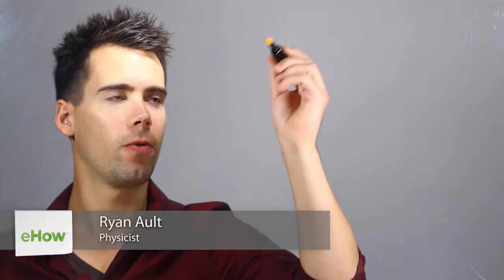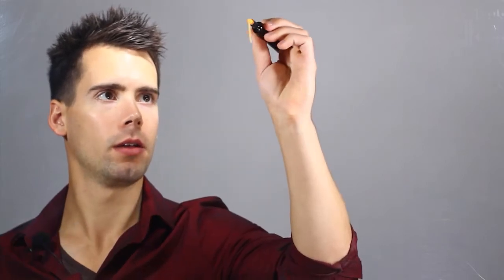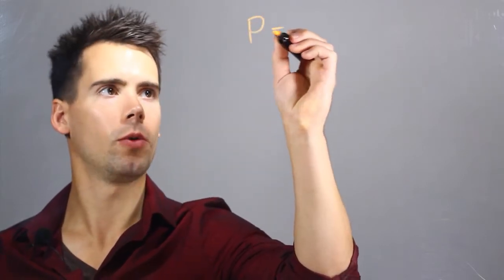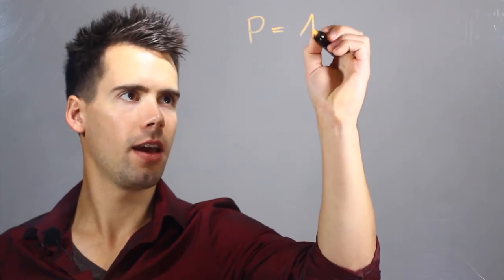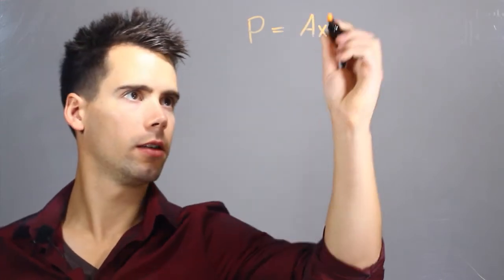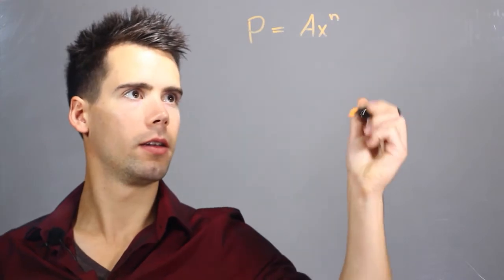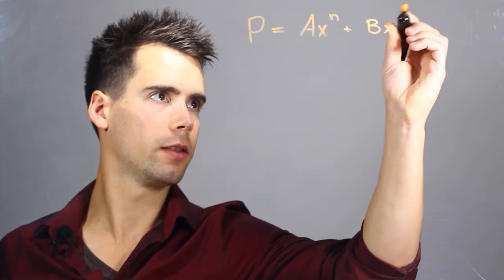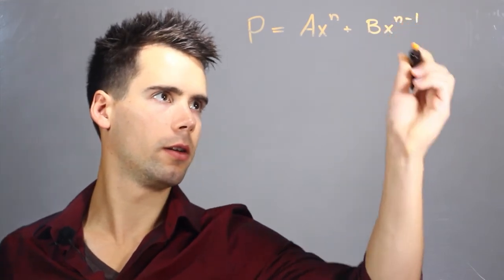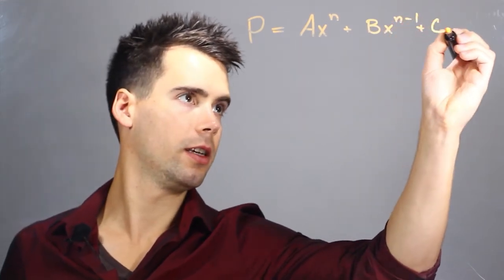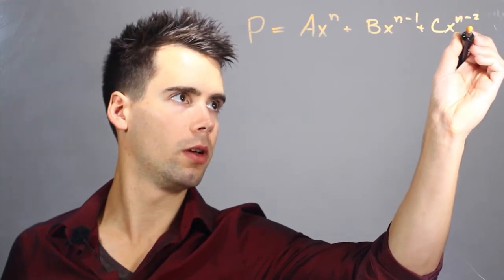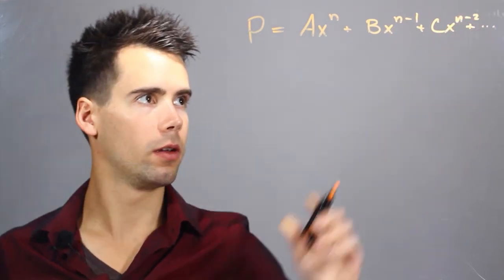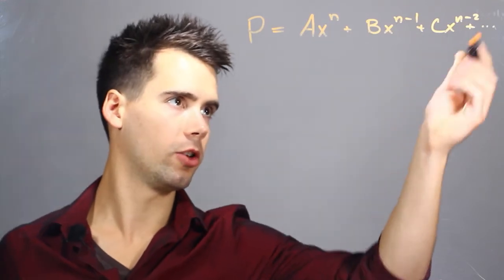Hi, I'm Reinall. I'm a physicist and this is how to create a polynomial function. The general form for a polynomial, we could call it p, is equal to ax to the n plus bx to the n minus 1 plus cx to the n minus 2, and this can go on until you reach x to the 0.